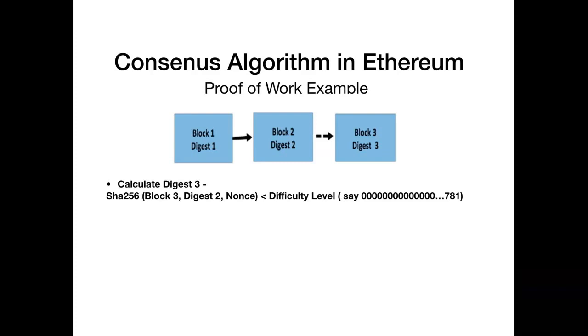The mathematical equation could be something like calculate digest 3 value which should be less than the difficulty level. So let's assume the difficulty level is preset as some leading zeros with value 781. Now the digest 3 is calculated using a hash algorithm like SHA-056 and by creating the hash of the values which is the previous block block 2, digest 2 and nonce.